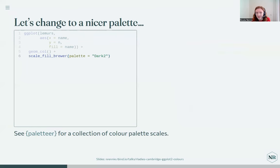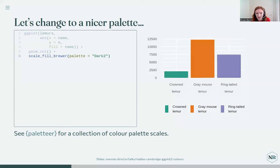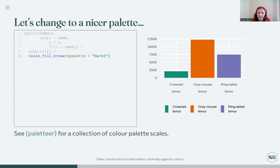Let's change to a nicer color palette. There are built-in scale_color and scale_fill functions that change the colors you see. The scale_brewer functions are pretty good, and there are colorblind-friendly palettes in those options as well. There are also additional packages that provide even more palettes with scale functions you can use directly with ggplot2. I want to point out the paletteer package, which collates all other R packages that have color palettes and scale functions into one package, so it's really useful if you want to browse all potential options.